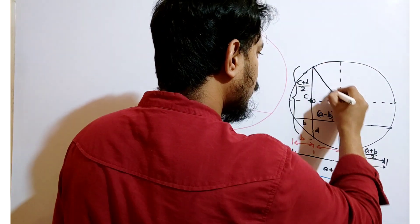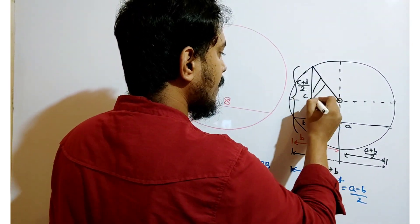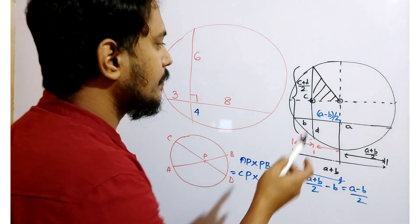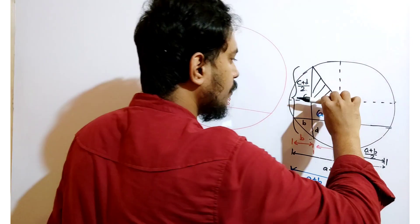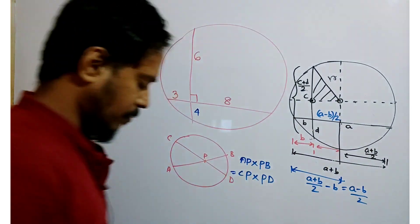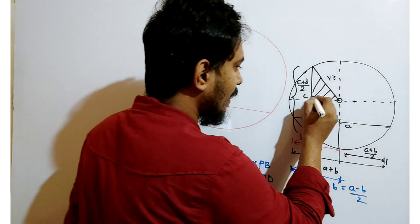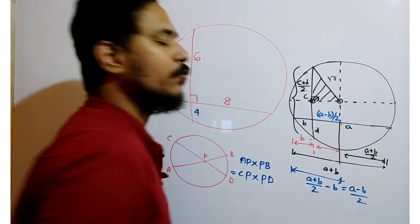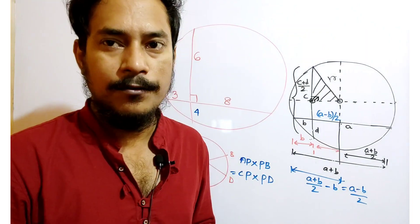Now, if we join those two points, in this circle this length is C plus D by 2, this one is A minus B by 2, and this is our radius. This is a right angle triangle. This angle is 90 degree. So we can apply Pythagoras theorem over here.